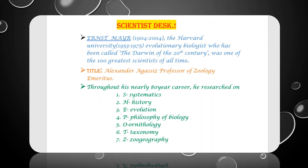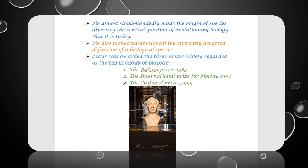Throughout his nearly 80-year career, he researched on: 1. Systematics, 2. History, 3. Evolution, 4. Philosophy of Biology, 5. Ornithology, 6. Taxonomy, and 7. Biogeography. He almost single-handedly made the origin of species diversity the central question of evolutionary biology that it is today.